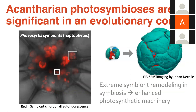Furthermore, the acantharian symbionts undergo a large morphological change in symbiosis. A free-living symbiont has two chloroplasts and is quite small, but the symbiont in symbiosis is much larger with many more chloroplasts. This is evident in FIB-SEM imaging performed by Johan de Selle — the free-living symbiont has those two chloroplasts and is smaller, but when living in symbiosis it gets larger and has more chloroplasts. We have extreme symbiont remodeling in symbiosis, focused on enhancing photosynthetic machinery.